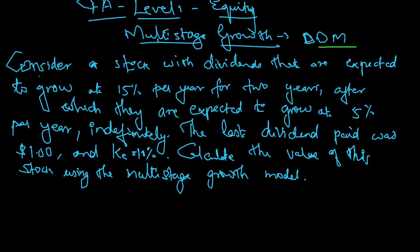Consider a stock with dividends that are expected to grow at 15% per year for two years, after which they are expected to grow at 5% per year indefinitely. So different growth rates are given here - first two years 15%, after that 5% indefinitely.